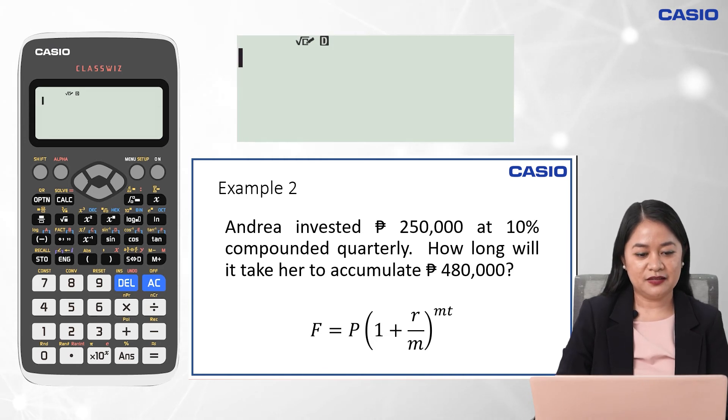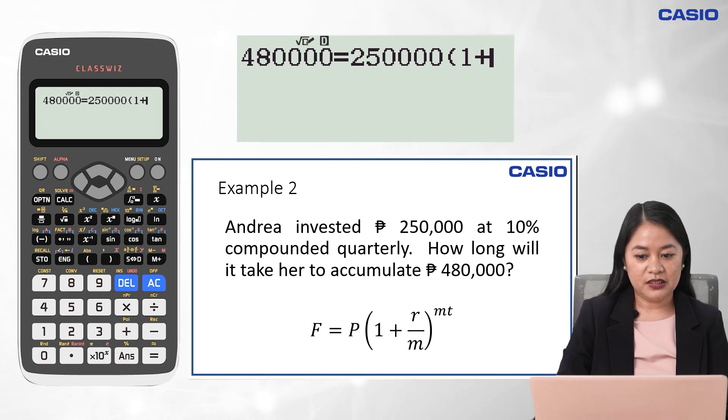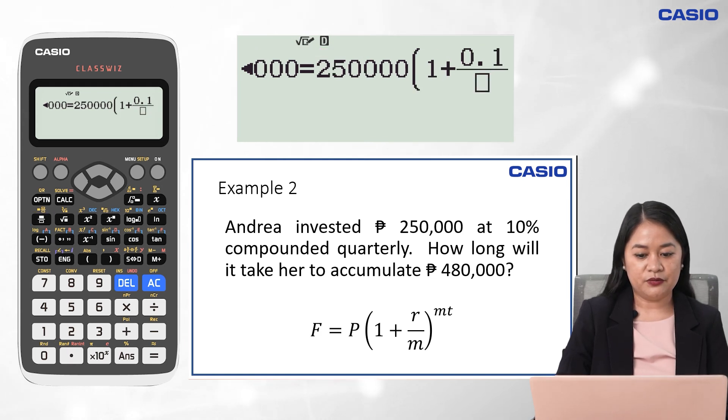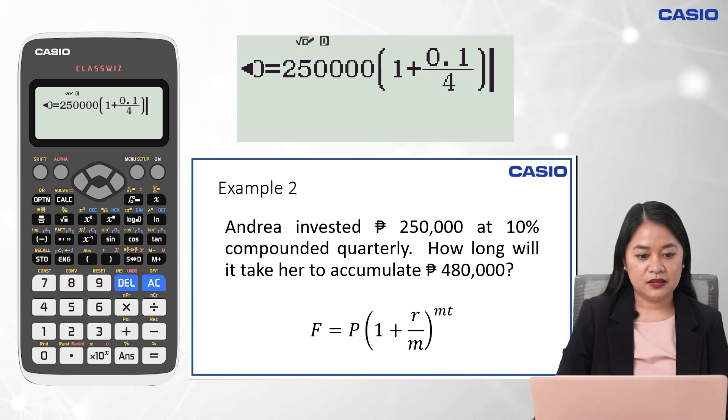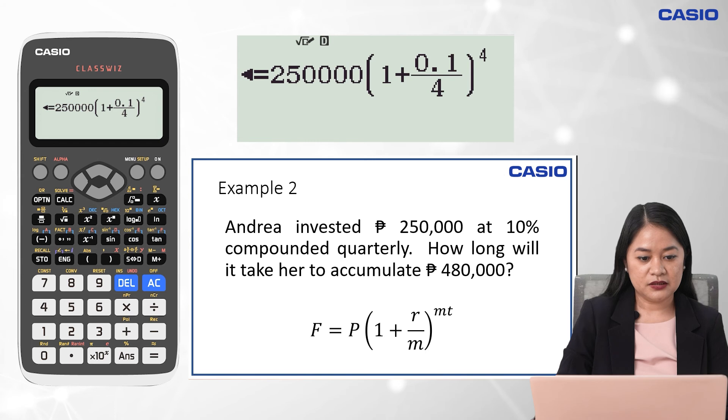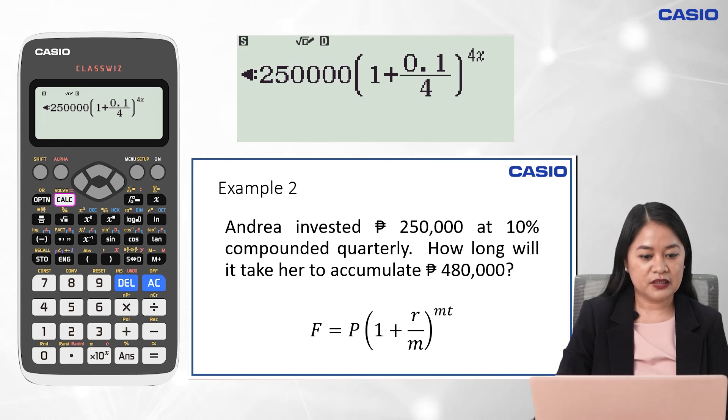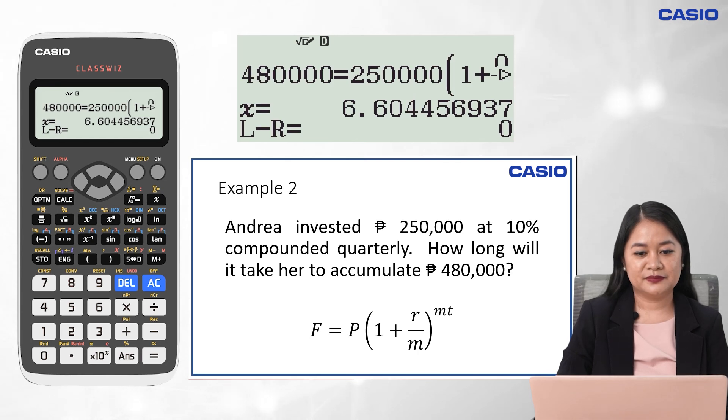Input 480,000, then press alpha, calc, and then we input the principal of 250,000, open parenthesis, 1 plus annual interest rate of 10% or 0.1, fraction key, then for m, that is quarterly, so the value is 4. Right arrow key, close parenthesis, exponent key, 4, and then again, we represent the period of time as x. After this equation, we press shift, calc, and then equal sign. So it means that Andrea will take 6.6 years to accumulate 480,000 pesos from her investment.